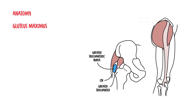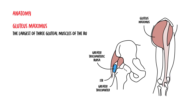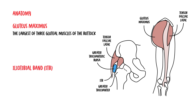The gluteus maximus is the largest of three gluteal muscles of the buttock. This muscle spans the side of the hip together with the tensor fasciae latae before joining on to become the iliotibial band. The iliotibial band is a long tendon that passes over the trochanteric bursa on the outside of the greater trochanter. It runs down the side of the thigh and attaches to the anterolateral aspect of the tibia.